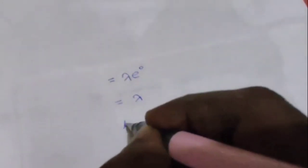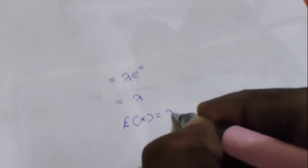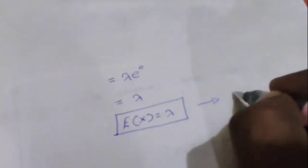We know that e to the power minus lambda times e to the power lambda equals e to the power 0, which is 1. Therefore lambda times 1 equals lambda. So E of x equals lambda — this is the mean value, which we call equation 1.